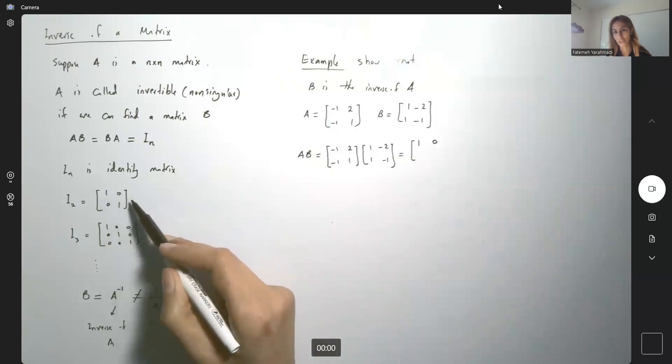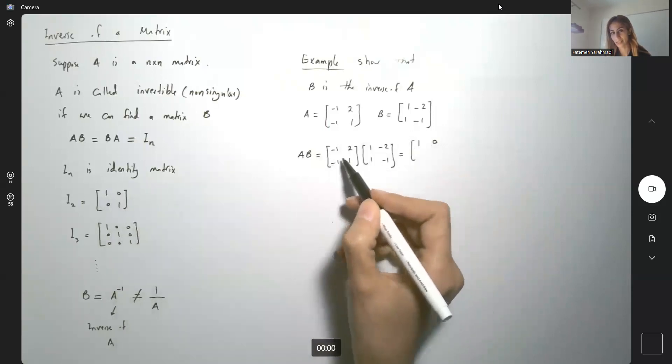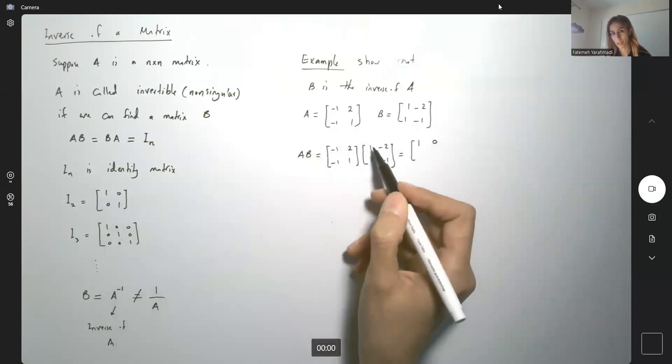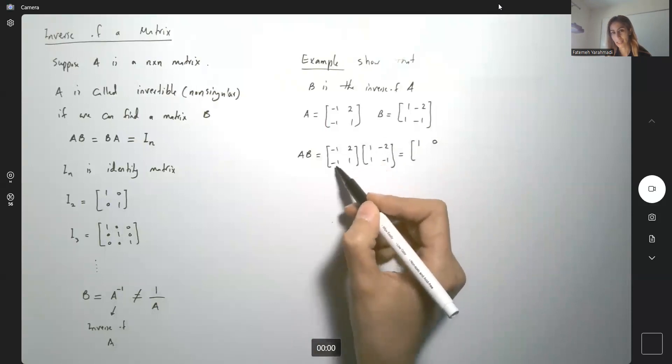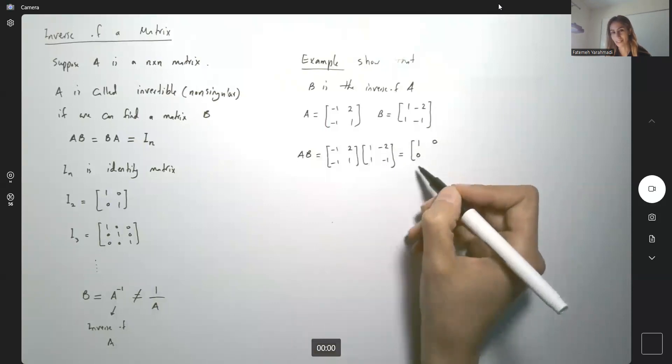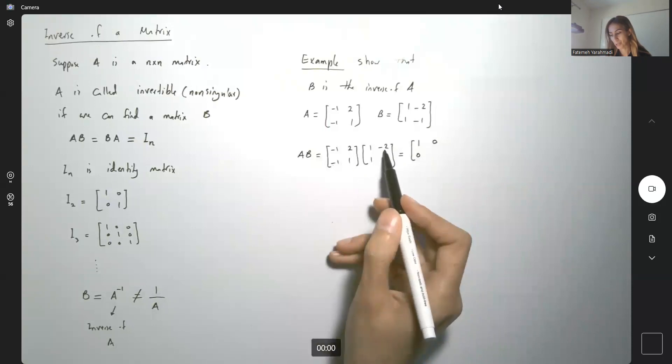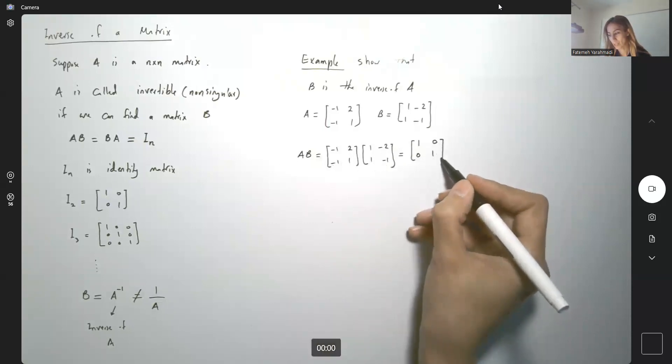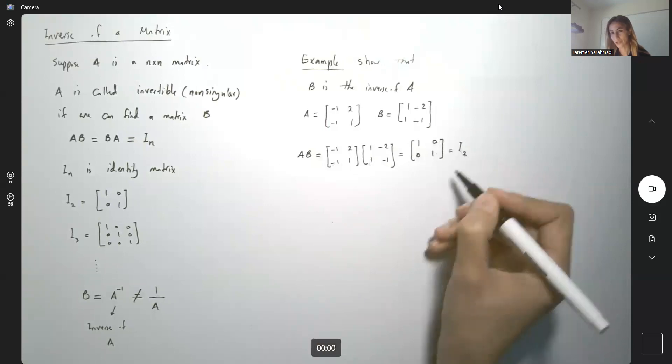Identity matrix of size 2. Now let's move on to the second row. The second row multiplied by the first column. Negative 1 times 1 plus 1 times 1, it is 0. And then negative 1 by 2, 2 plus negative 1, which is 1. So we ended up having I2.